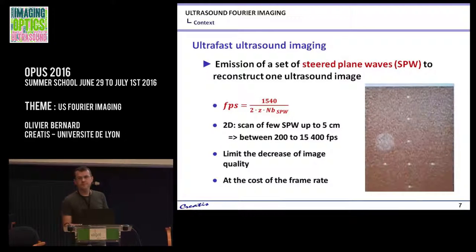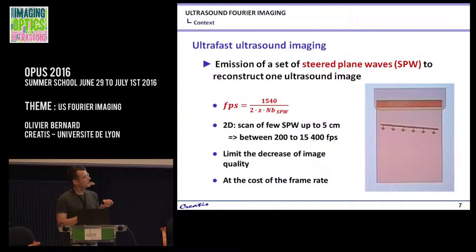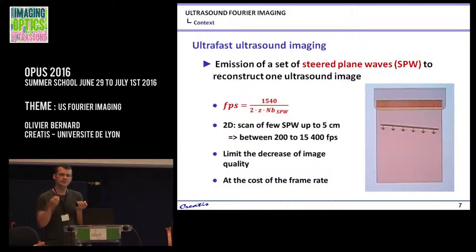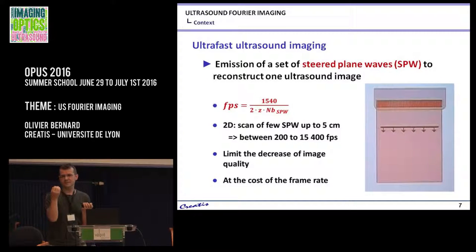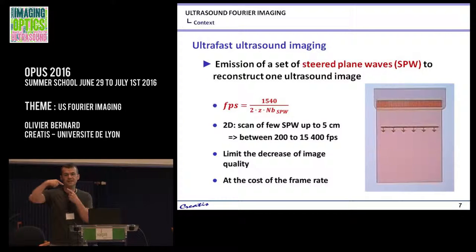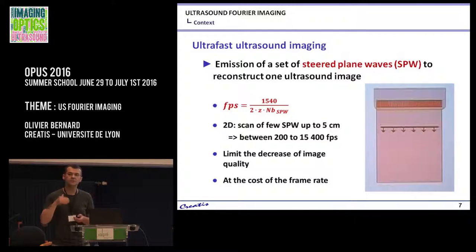Why does the plane wave have to be steered? Imagine you have only one point scatterer. If you reconstruct the image, you will have a typical artifact. With a steered plane wave, this artifact will not be exactly the same. By doing the summation, you suppress those artifacts and increase the signal information. This is the reason why you really need to do the steering.